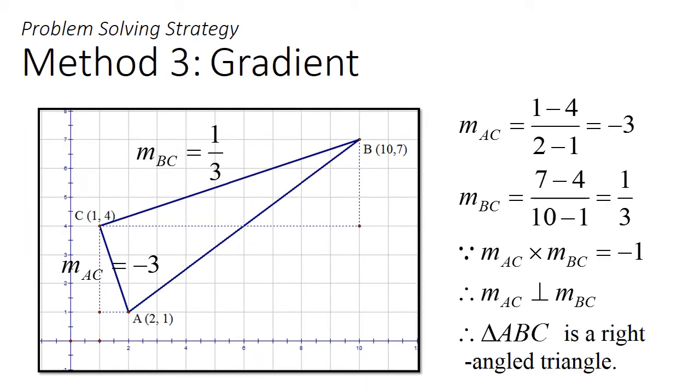In method 3, we find the gradient of lines BC and AC and show that the product of the gradient is negative 1.